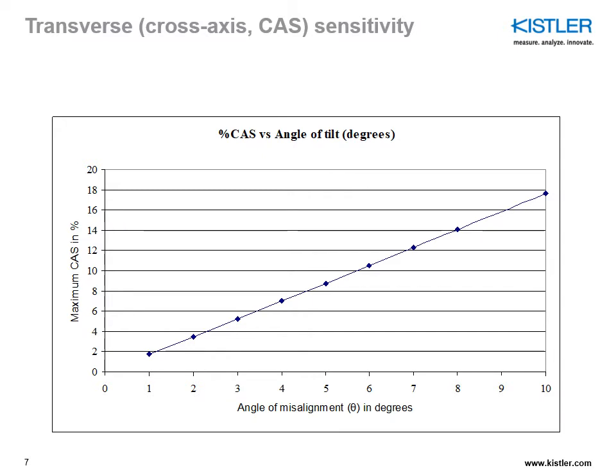This demonstrates that even a slight misalignment of the sensitive element after a transverse shock can cause a large increase in cross-axis sensitivity. A tilt of just 1% in the sensing element orientation can lead to virtually a 2% increase in cross-axis sensitivity.